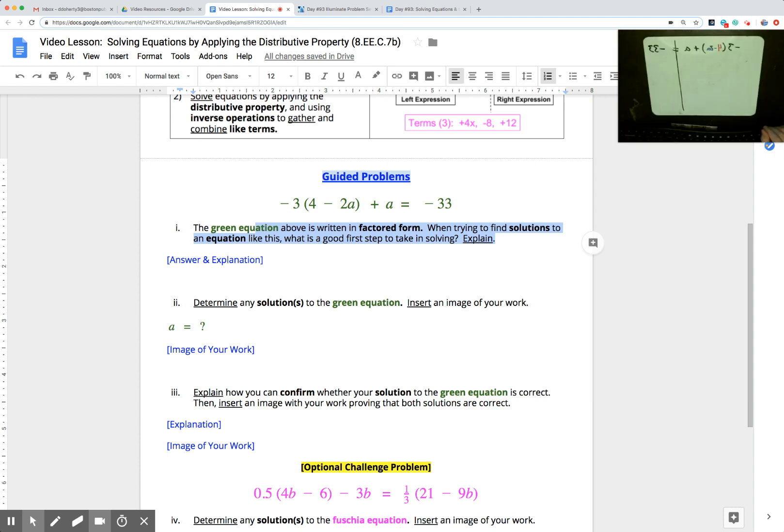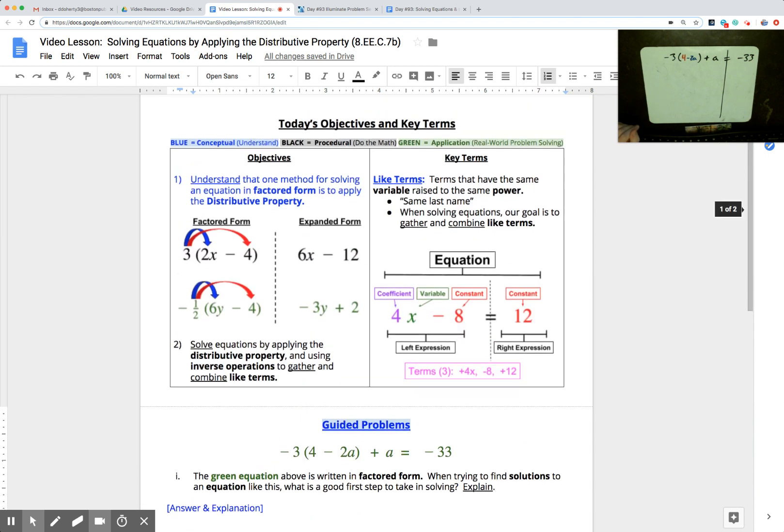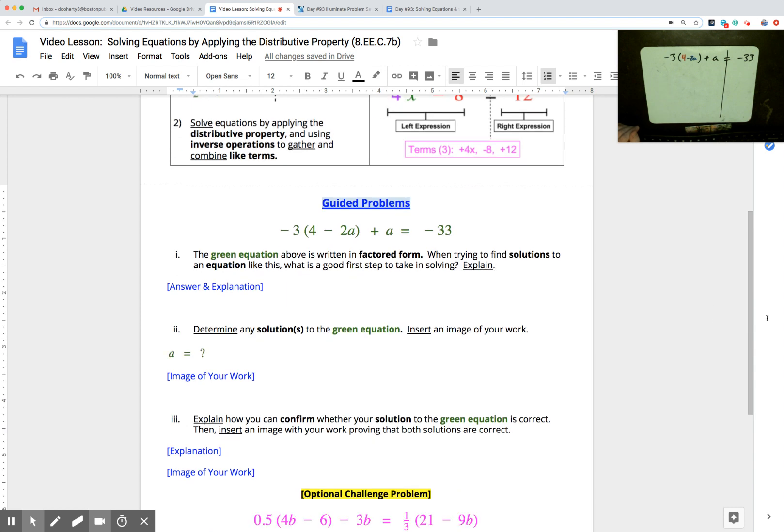I'm switching over to my whiteboard. You should be pausing the video. When you come back from pausing the video we're going to talk through. All right, let's think about part 1 first. Part 1 says if they're in factored form, when we're trying to solve equations or find solutions for factored form equations, what's a good first step to take? And we should recognize the distributive property, what we started applying yesterday, a skill we learned in seventh grade with Mr. Neville and Miss Ogagva. If we start using the distributive property, that can help us get rid of parentheses and solve an equation.